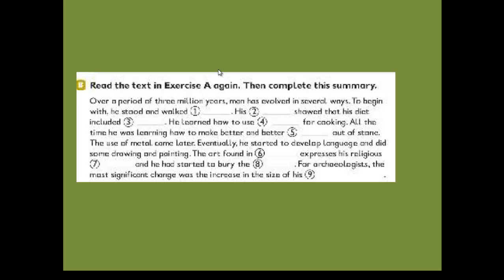Over a period of three million years, man has evolved in several ways. To begin with, he stood and walked upright. His teeth showed that his diet included meat. He learned how to use fire for cooking. All the time he was learning how to make better and better tools out of stone.